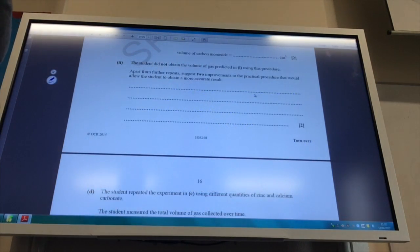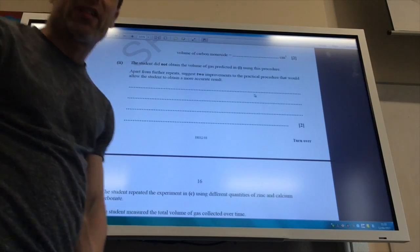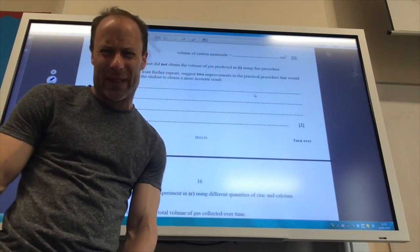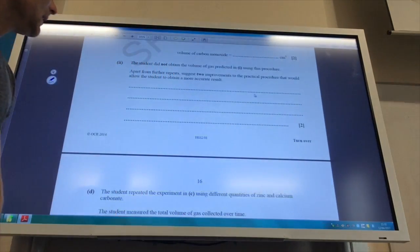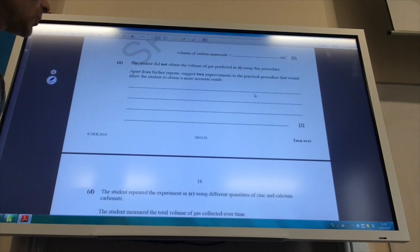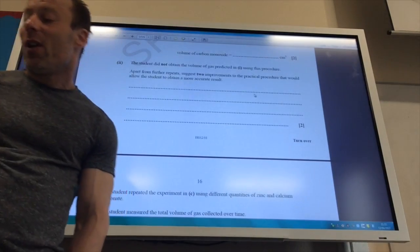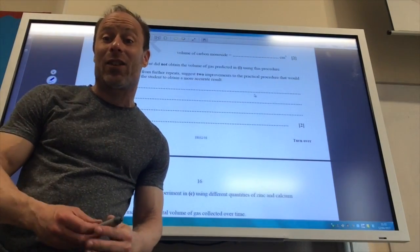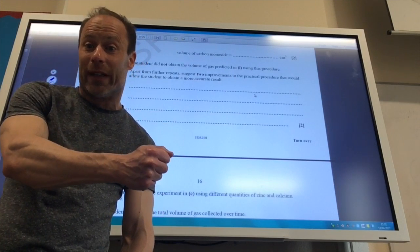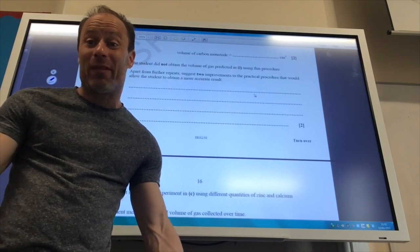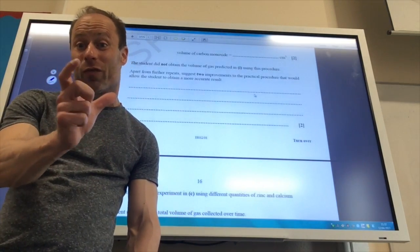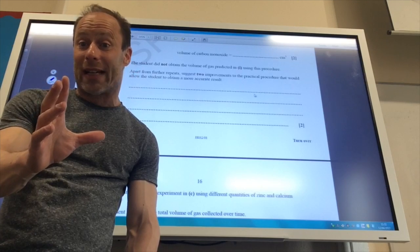So the student did not obtain the volume of gas predicted. Now, interestingly, it doesn't tell us he got too much or too little. It just says he didn't get what he expected. So we need to think both ways. Apart from further repeats, suggest two improvements to the practical procedure that would allow the student to obtain a more accurate result. Well, the first one would be, to make sure the reaction has gone to completion, is to heat until the syringe stops moving. He's heated it for two minutes. Maybe the reaction hasn't been completed by then. We don't know. So maybe keep heating it until the syringe stopped moving. And then we know no more gas is being produced.